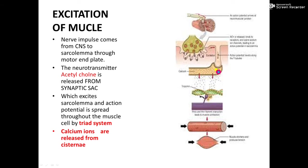On either side of the T-tubule, cisternae are present. Cisternae are the storehouses of calcium. As the action potential comes to the T-tubule, it spreads to the cisternae. Then calcium ions from the cisternae are liberated into the sarcoplasm. In the sarcoplasm, the thin filament and the thick filament are present. The thin filament contains three types of protein molecules: troponin, tropomyosin, and F-actin.